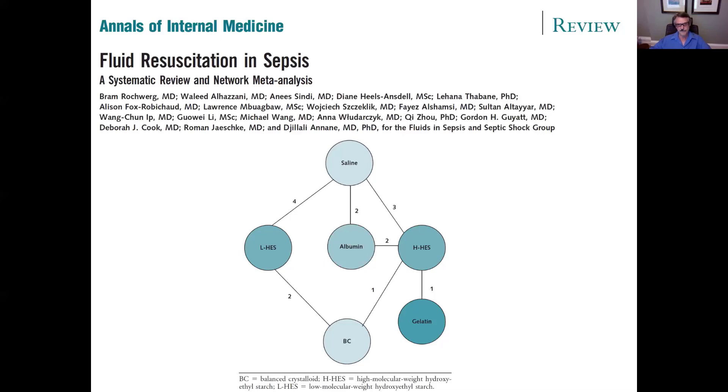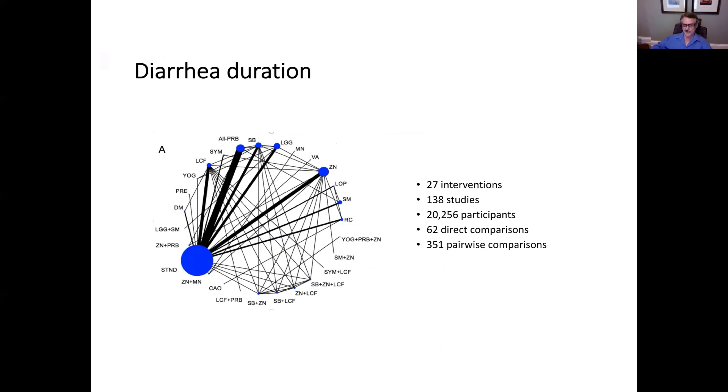The other one that I'm going to show you has 27 different interventions. It is children with diarrhea and trying to reduce the duration of their diarrhea. You can imagine that when you have 27 interventions, sorting out their relative merit will be very challenging.